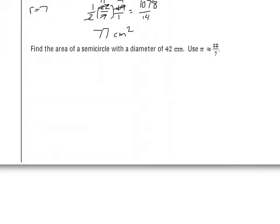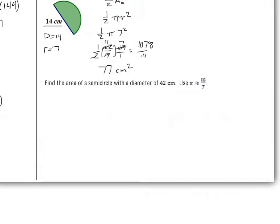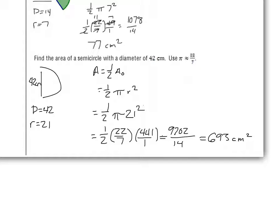Find the area of a semicircle with a diameter of 42, using π = 22/7. Draw a sketch and try this on your own. The area is one-half times π times r squared — one-half of π times 21 squared. 21 squared is 441. Plugging in 22/7 for π and multiplying: 1 times 22 times 441 equals 9,702; bottom times bottom gives 14. Dividing: 9,702 ÷ 14 = 693 centimeters squared.